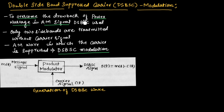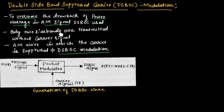To overcome the drawback of power wastage in AM signal, DSBSC signal is used. We know the AM signal uses only 33% of its power and the remaining 67% of power is wasted. To overcome that drawback, we will be using DSBSC modulation. In DSBSC, the carrier signal is not transmitted.